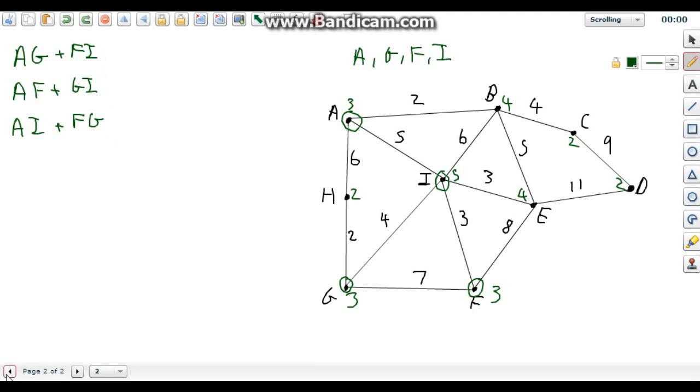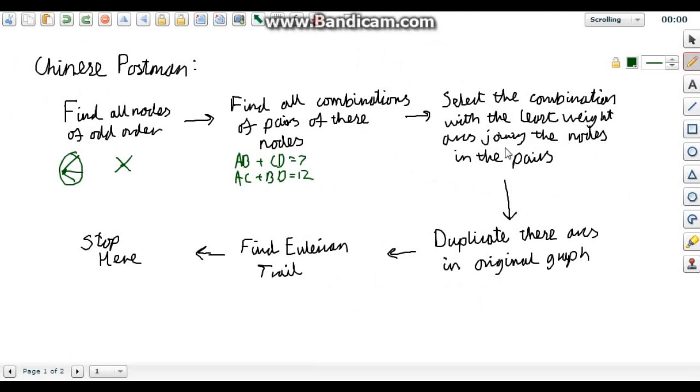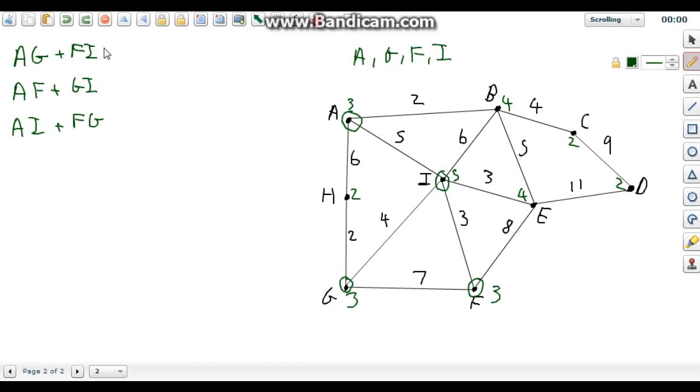So now, the third step is to find the combination with the least weight arcs joining the nodes. So we need to find the arcs joining our pairs and see what their weight is.